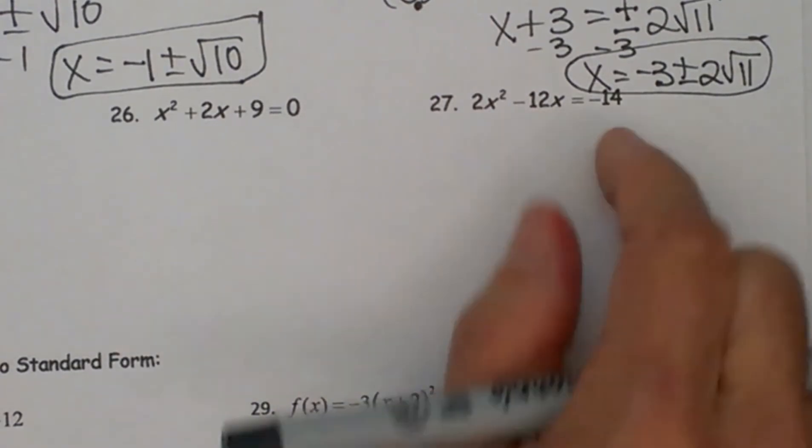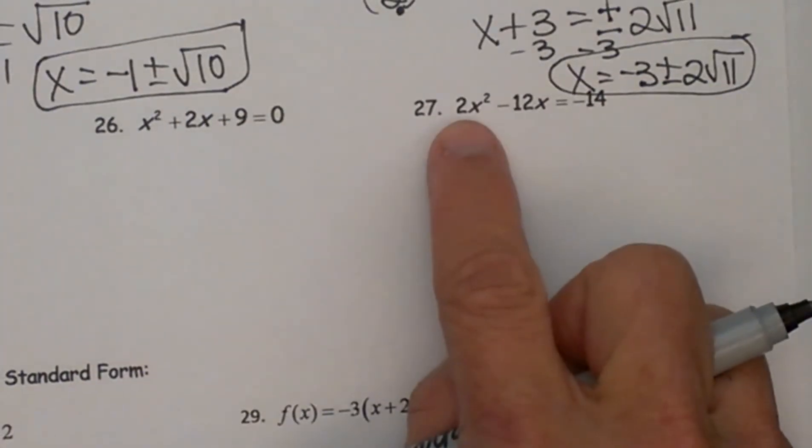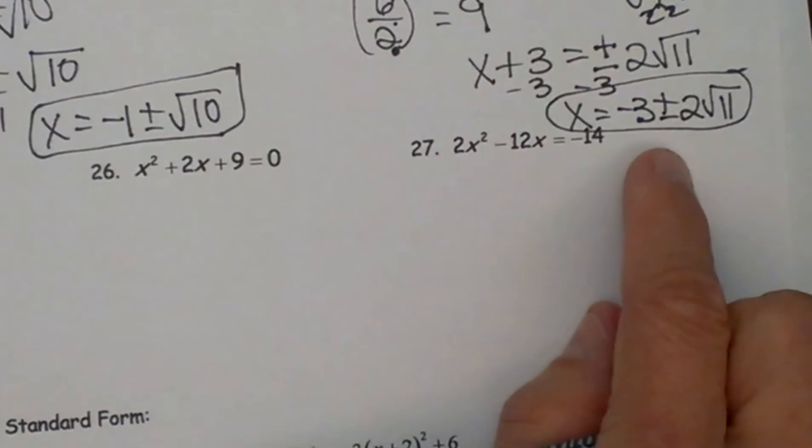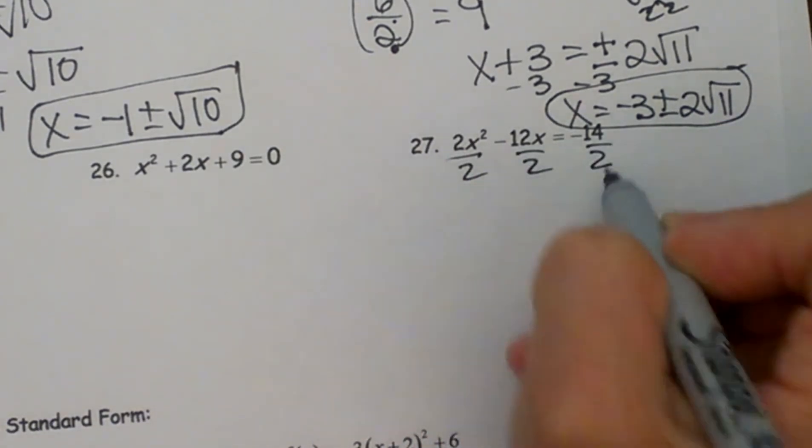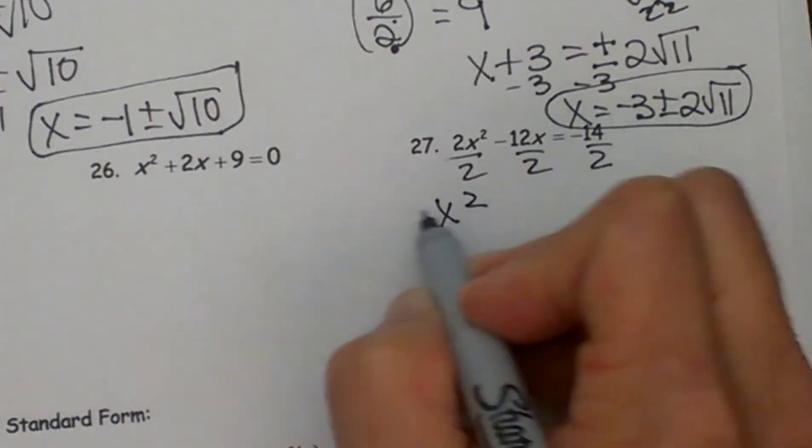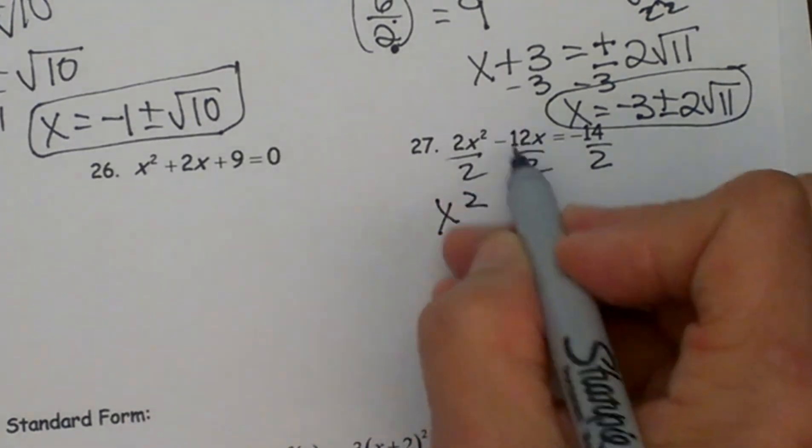My x terms are both together on the left hand side but I have a lead coefficient of 2, so I can't just complete the square. I have to get rid of that 2, so I am going to divide every term by 2 to get my lead coefficient to be a 1, which is what I need.